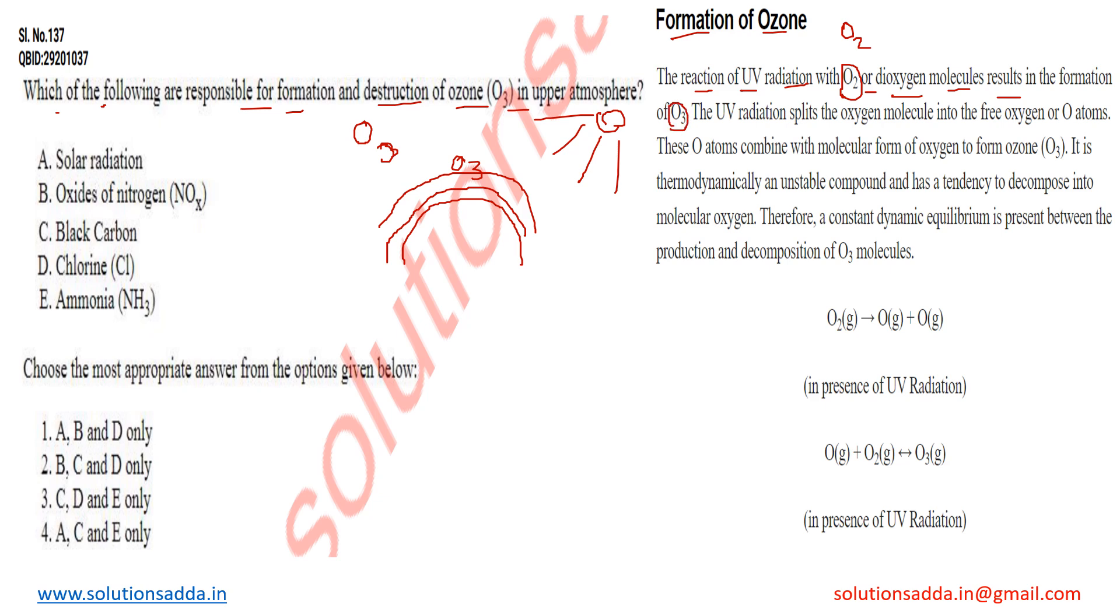The UV radiation splits the oxygen molecules into free oxygen or O atoms. These O atoms combine with molecular form of oxygen to form O3.